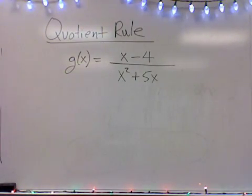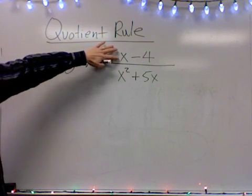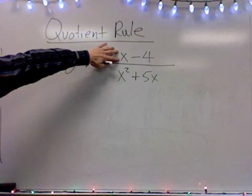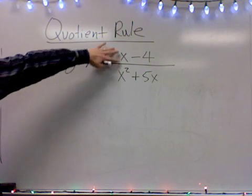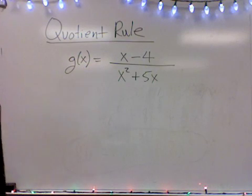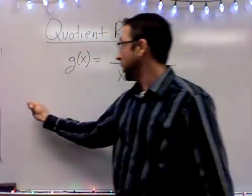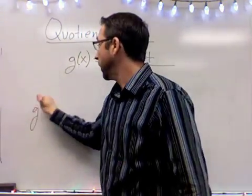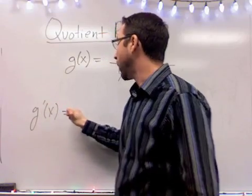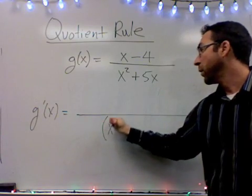All right, so here's our example with the quotient rule. We're given a function that is a quotient — we've got something divided by something else. These are pretty complicated expressions, so we can't dodge the quotient rule by using the power rule instead. So let's apply the quotient rule. When I fill out my quotient rule, I always start with the bottom. It's the bottom squared.